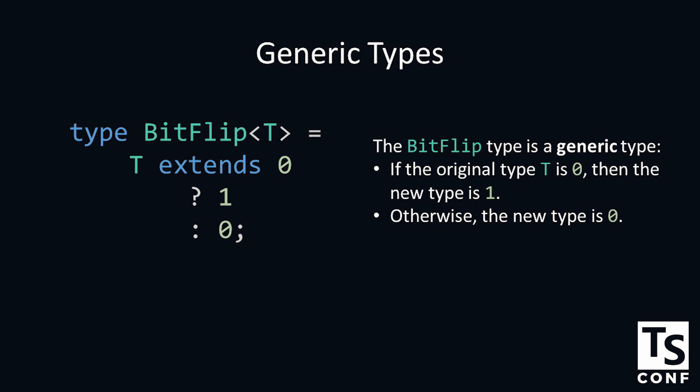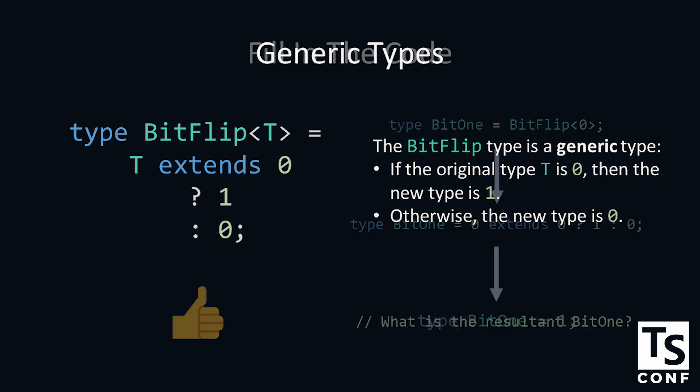Getting more advanced: type bit flip T. The bit flip type is a generic type, also sometimes called a templated type. It takes in an original type and then it spits out some new type based off of that. In this one, it's a conditional type. We're saying if the original type extends 0, then the new type is 1, otherwise 0. In this case, extends means 'is this sort of described by', and because there's literally only one thing that can be described by 0 — the literal 0 — it's kind of like a pseudo equality operator. Which means, if you were to have this bit 1 type that's equal to bit flip of 0, we're trying to figure out what is the resultant type.